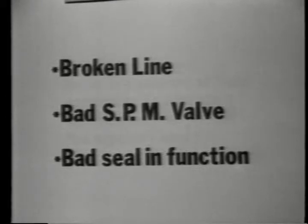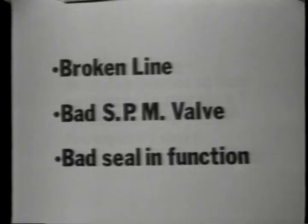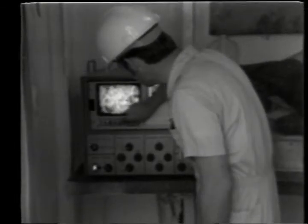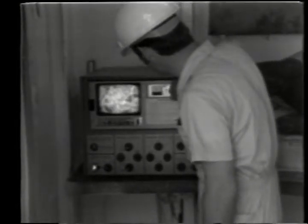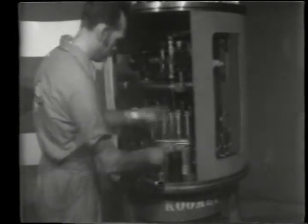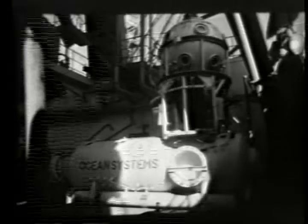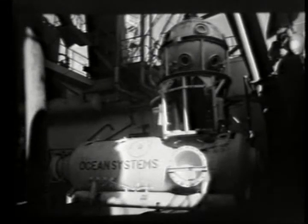If these procedures do not stop the leak, the problem is most likely caused by either a broken line, a bad SPM valve, or a bad seal in the function. The best way to determine which of these is the problem is to lower a TV camera to the stack and observe the system in operation. Any fluid leak should be easily seen as a white mist flowing from the leaking area. If the leak is in the pod, the pod can be retrieved to the surface and repaired. If the leak is somewhere on the stack, you send a diver down to make the necessary repairs, or pull the stack, pressure test to locate the leak, and then repair it on the surface.